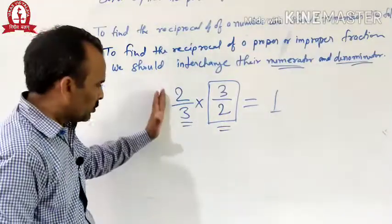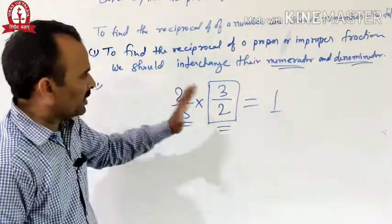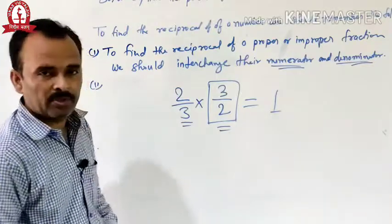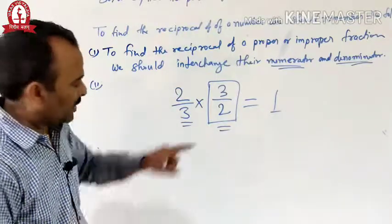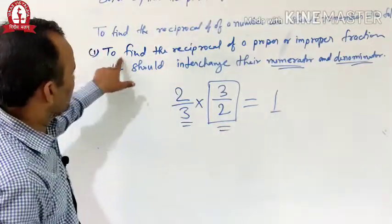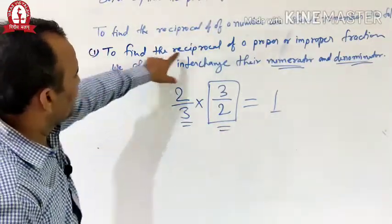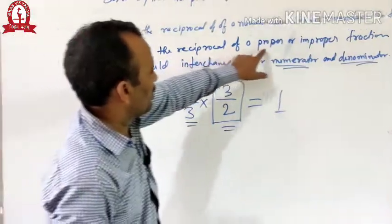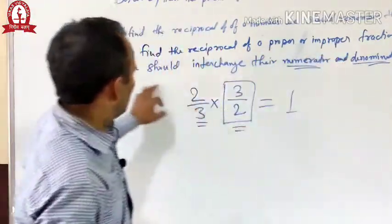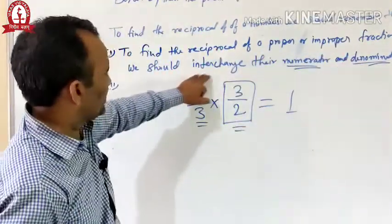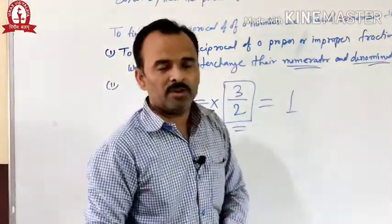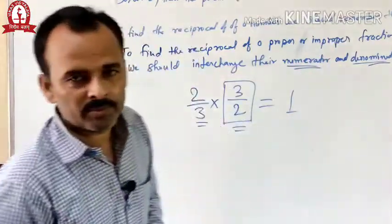So we say 2 by 3 and 3 by 2 are reciprocals of each other. To find the reciprocal of a proper or improper fraction, we should interchange their numerator and denominator.